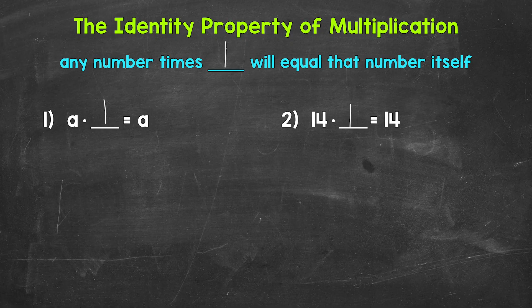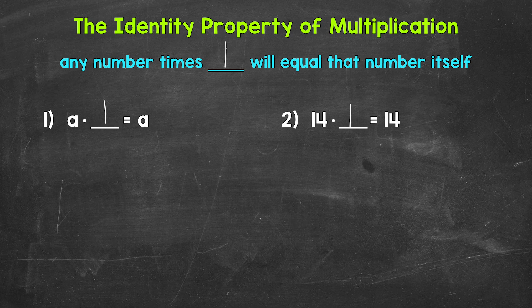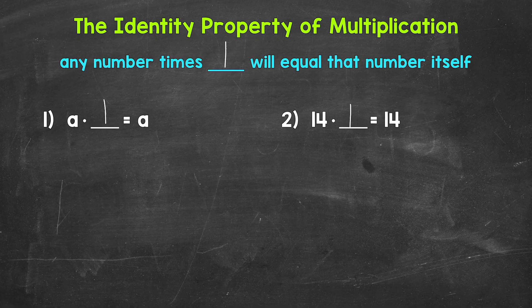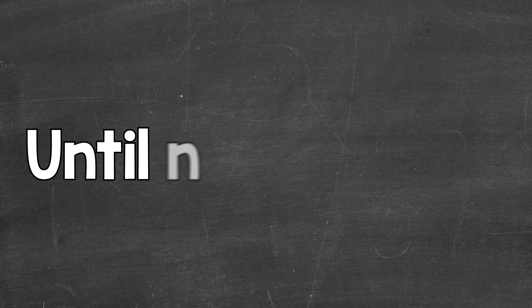So, there you have it. There's an explanation of the identity property of multiplication. It's a very simple property, but a very important one to be familiar with. I hope that helped. Thanks so much for watching. Until next time, peace.